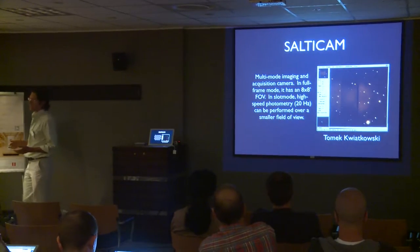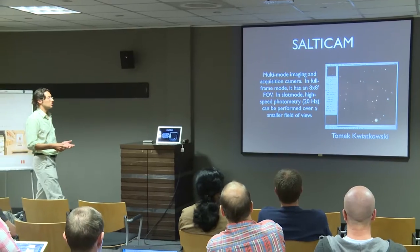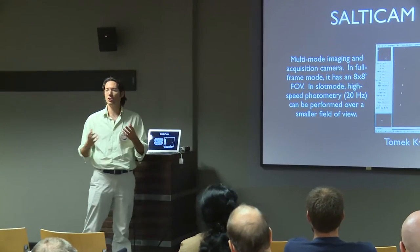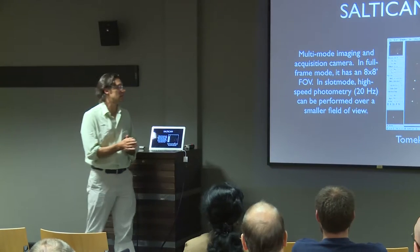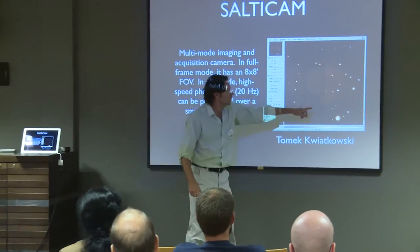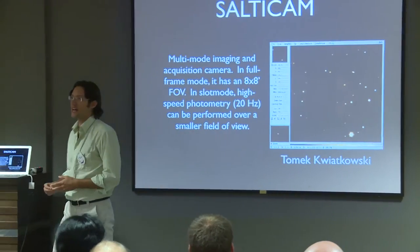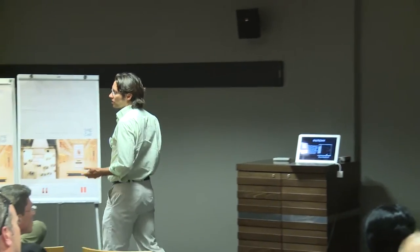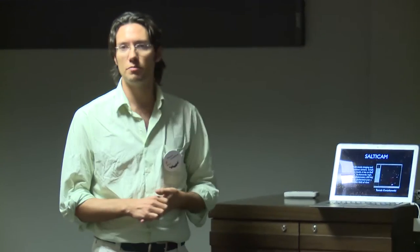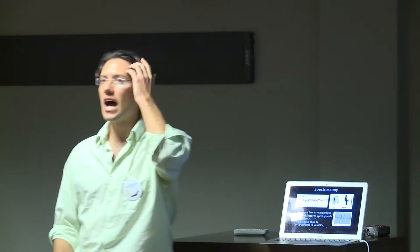There are two ways to do astronomical observations in the optical. One is imaging: the main imaging instrument is SALTICAM, which basically takes a photo, typically in narrow bands. You can follow this small moving object here — that's a near-Earth asteroid. A group of scientists from Poland are using SALT to observe near-Earth asteroids and measure how they rotate, looking for slow-rotating asteroids that would be good candidates for a space mission landing.